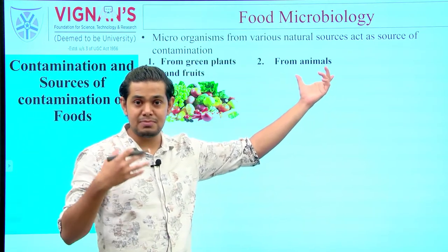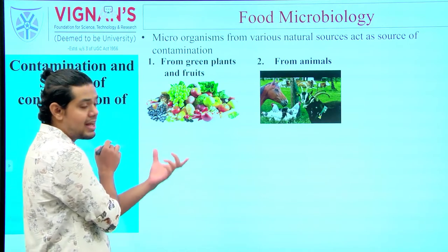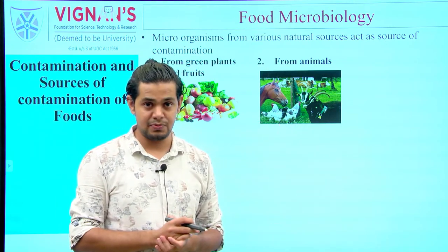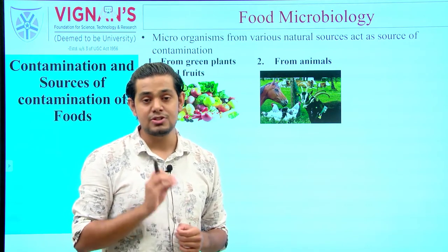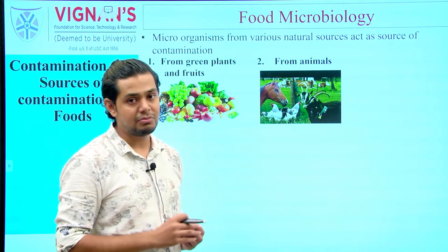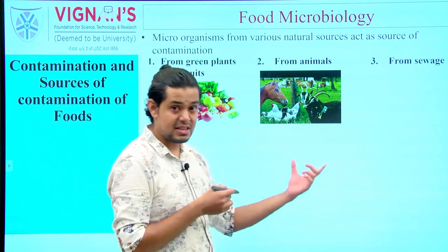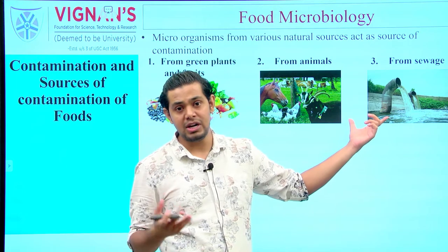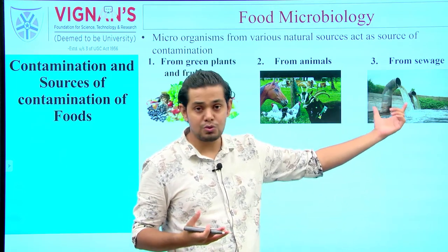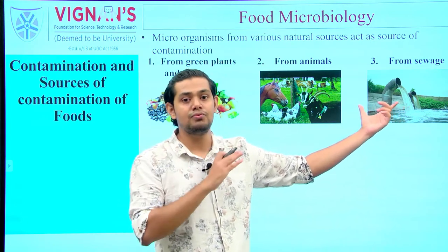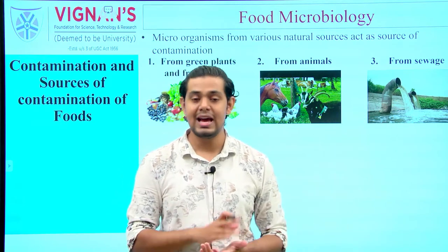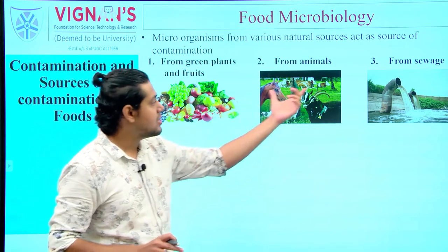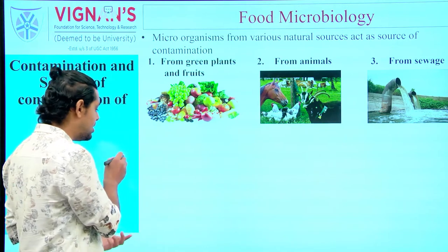Animals — specifically meat animals like poultry, sheep, goat, and cattle — can also be potential carriers of microorganisms, which is why effective animal grooming must be practiced. Sewage is another source: domestic sewage is often led into natural water bodies, and if such water is used for crop cultivation, the intestinal microflora in the sewage can contaminate the food product.